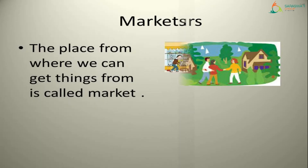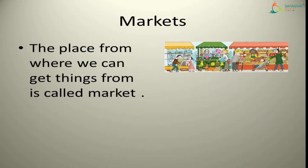The next word is Markets. The place where we can go and get things from is called market. Aisi jagah jahan pe hum chizein khareed sakte hai, usse hum market bulayenge. Jaise ke kapde ho, shoes ho, vegetables, fruits — yeh sab bhi lene hum market hi jaate hai.